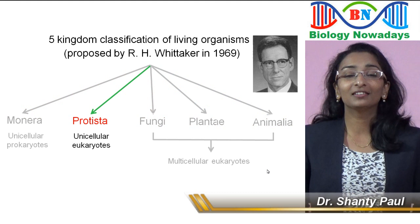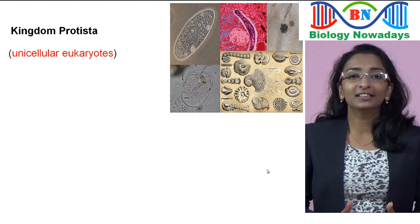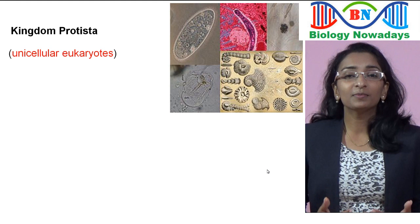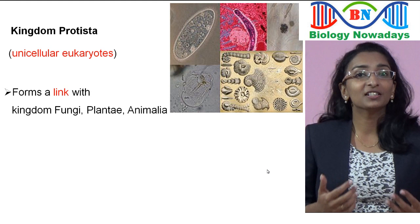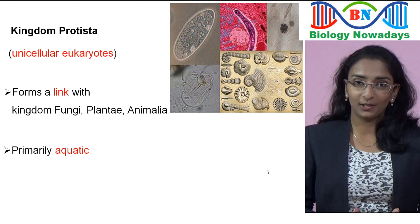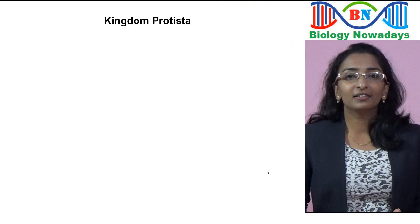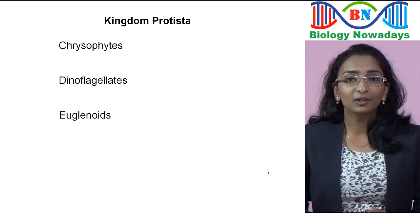Kingdom Protista consists of microscopic unicellular eukaryotes. Being eukaryotes, their cell body contains a true nucleus and other membrane-bound cell organelles. This kingdom forms a link with the other kingdoms — Kingdom Fungi, Plantae, and Animalia — which consist of multicellular eukaryotes. Members of Kingdom Protista, the protists, are mainly aquatic. They can be found in freshwater as well as in seawater. They reproduce asexually by binary fission and sexually by processes involving cell fusion and zygote formation. Kingdom Protista is divided into five groups: chrysophytes, dinoflagellates, euglenoids, slime molds, and protozoans.